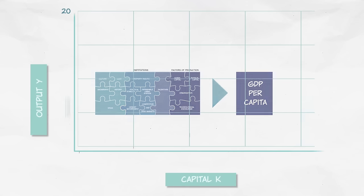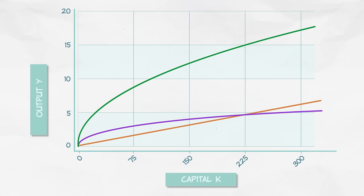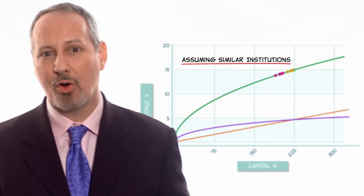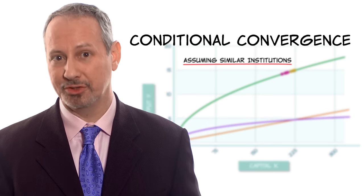Two countries with really different institutions are not going to converge. But if we focus in on countries with similar institutions, then the Solow model predicts that the poorer countries should grow faster. And all countries with similar institutions should converge to similar levels of output. We call this conditional convergence.